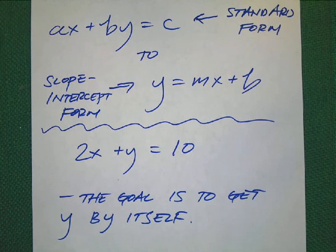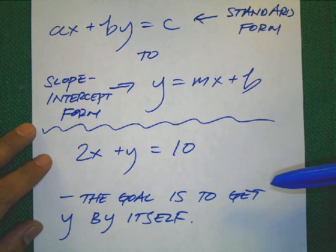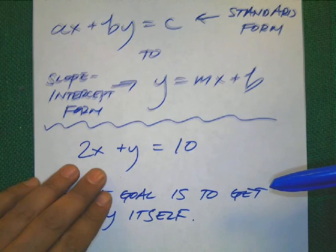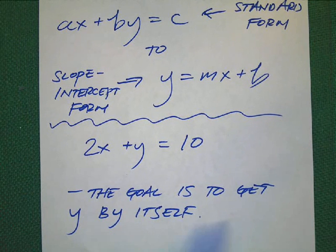Alright, so let's take this equation: 2x plus y equals 10. Standard form is where both x and y are on the same side. You'll see that right there.